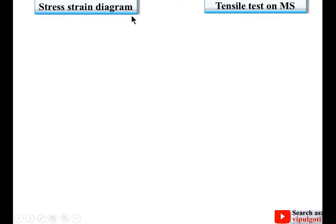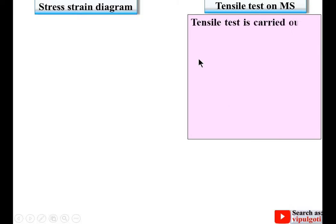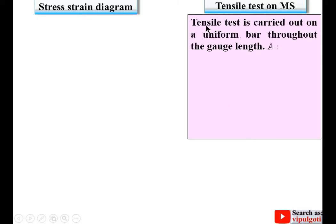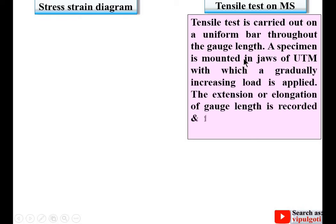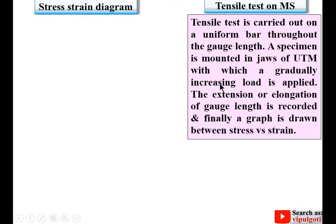The title is stress-strain diagram for tensile test on mild steel. First, a brief introduction about the tensile test. It is carried out on a uniform bar throughout the gauge length. A specimen is mounted in the jaws of a UTM, with which a gradually increasing load is applied. The extension or elongation of gauge length is recorded and finally a graph is drawn between stress versus strain.